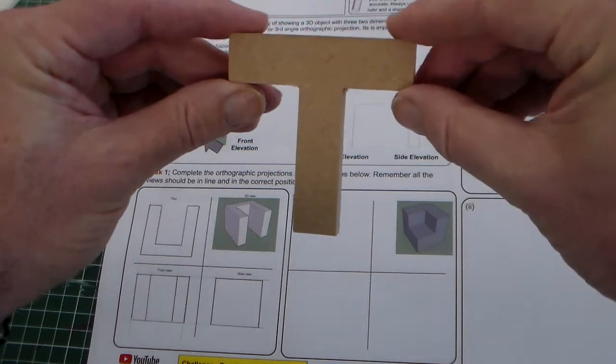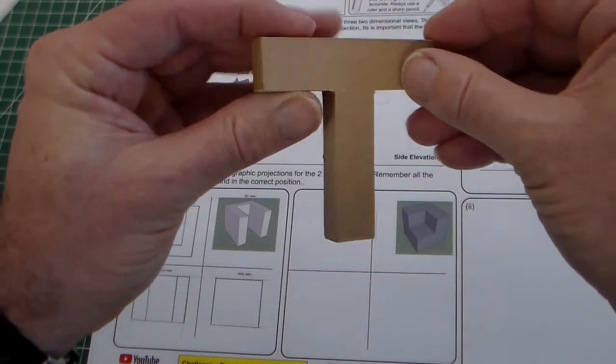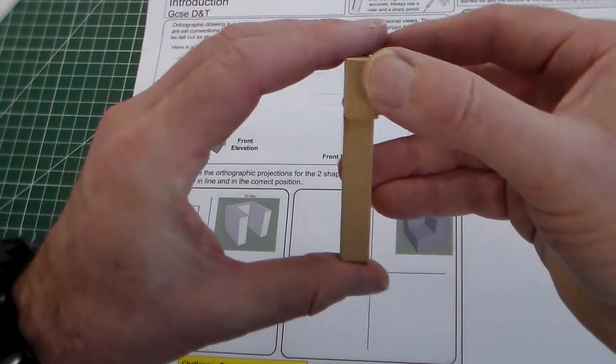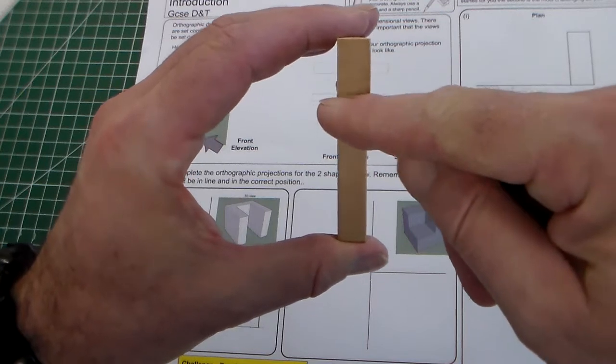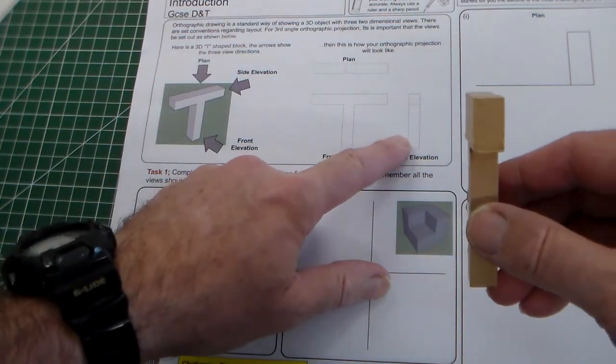We can turn and then have our front elevation. And then here we can turn the object and we have this view where we can see this line here, which is a side elevation.